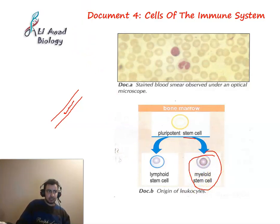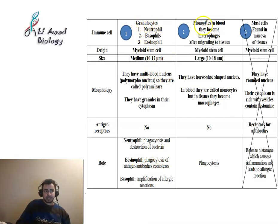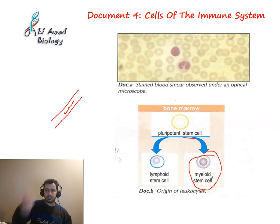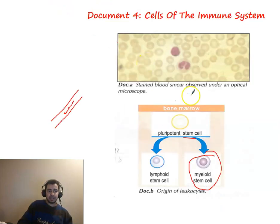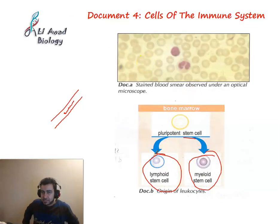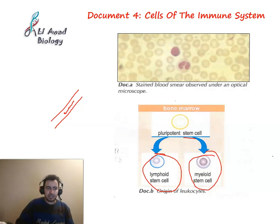Let's start with the cells derived from myeloid stem cells. The first type is called granulocytes, the second is called monocytes, and the third is called mast cells. The cells which are derived from lymphoid stem cells are called lymphocytes. In addition, myeloid stem cells also produce red blood cells and platelets. These cell populations are continuously dividing.